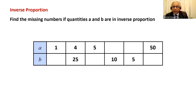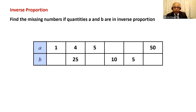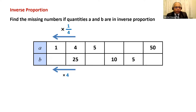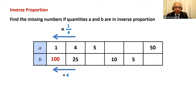Let's see whether you worked it out correctly. I'll start with the second column — that's the only column where I know values of both A and B. From the second column to the first column: the value of A has become one-fourth, from 4 to 1. Because it's inverse proportion, B will be multiplied by 4. So 25 times 4 is 100 — that's the value of B for the first column.